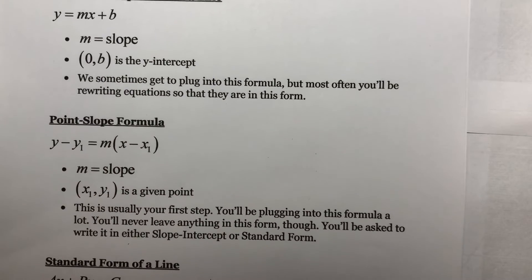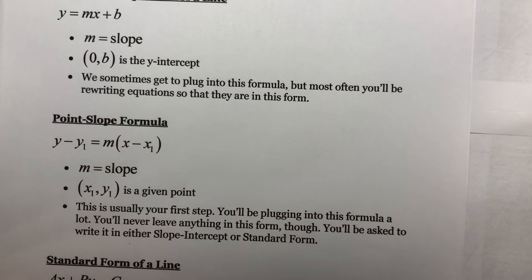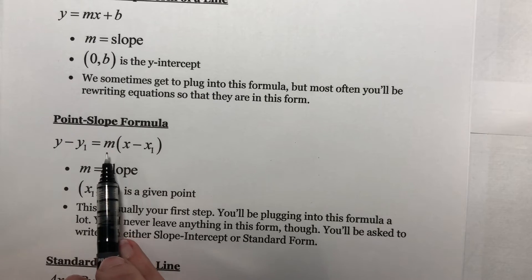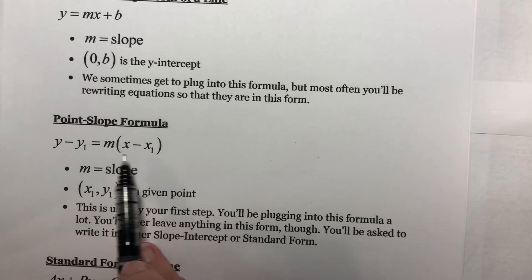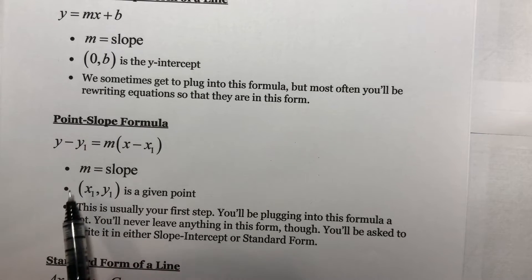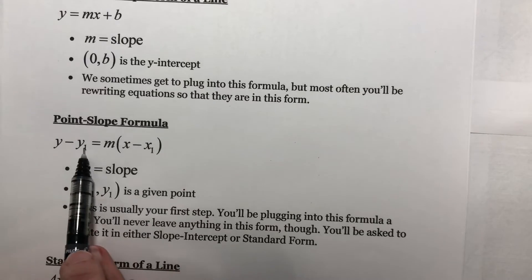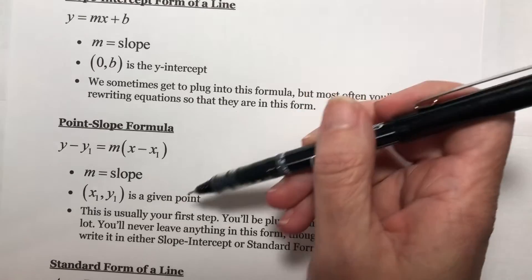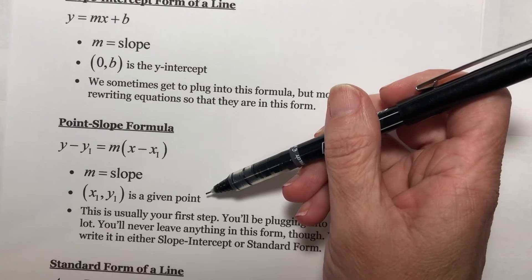The next formula is point-slope formula: y minus y1 equals m times x minus x1. Remember those are minus signs. m is still your slope. x1, y1 is a given point. Here, the given point had to be the y-intercept, but this works for any point.